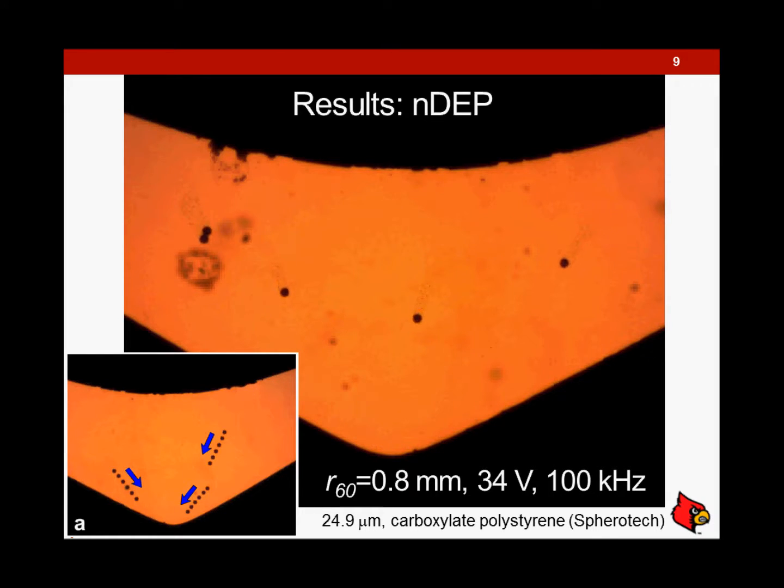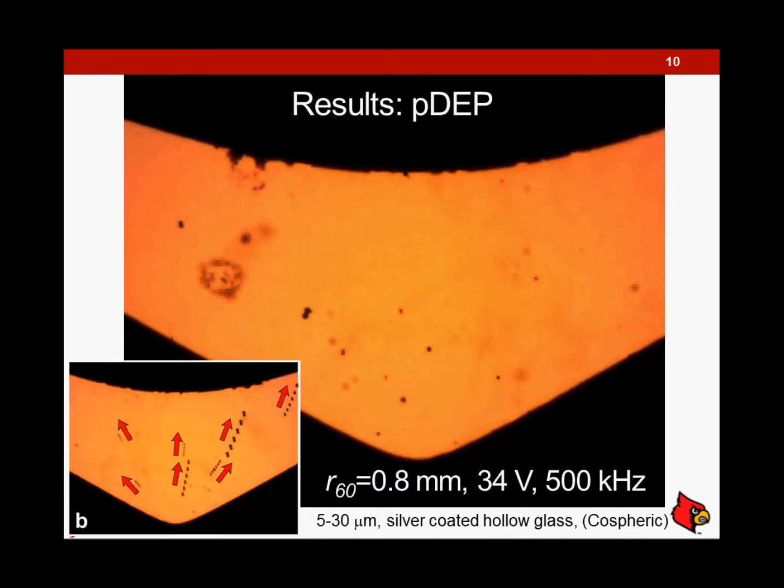We've also tested metal-coated hollow glass particles. When we apply our signal, they experience positive dielectrophoresis and are repelled here.